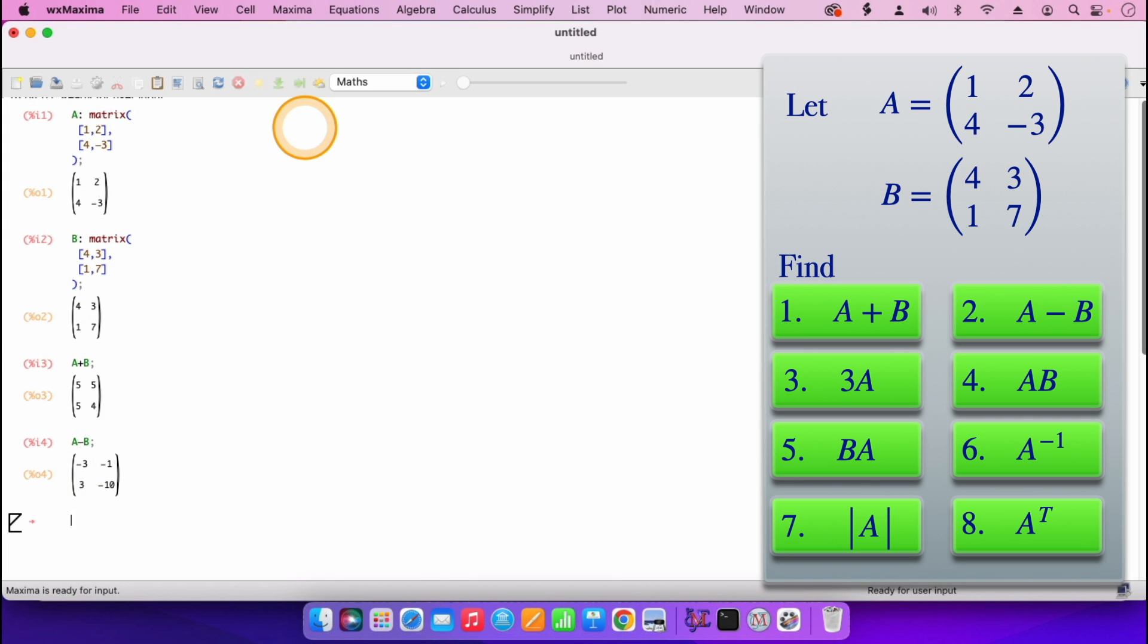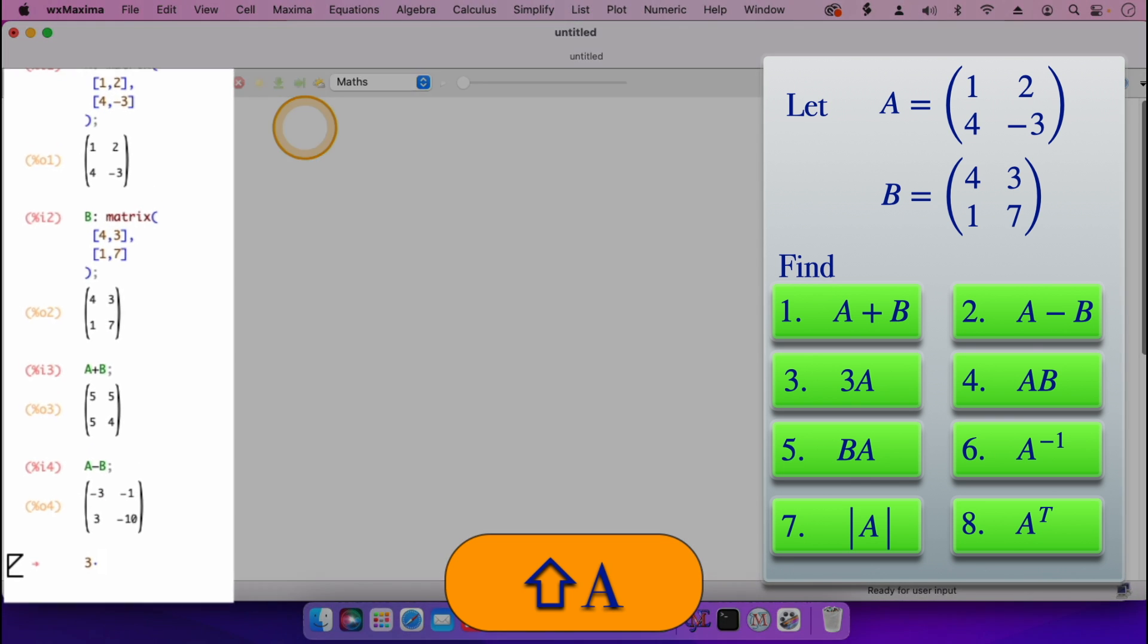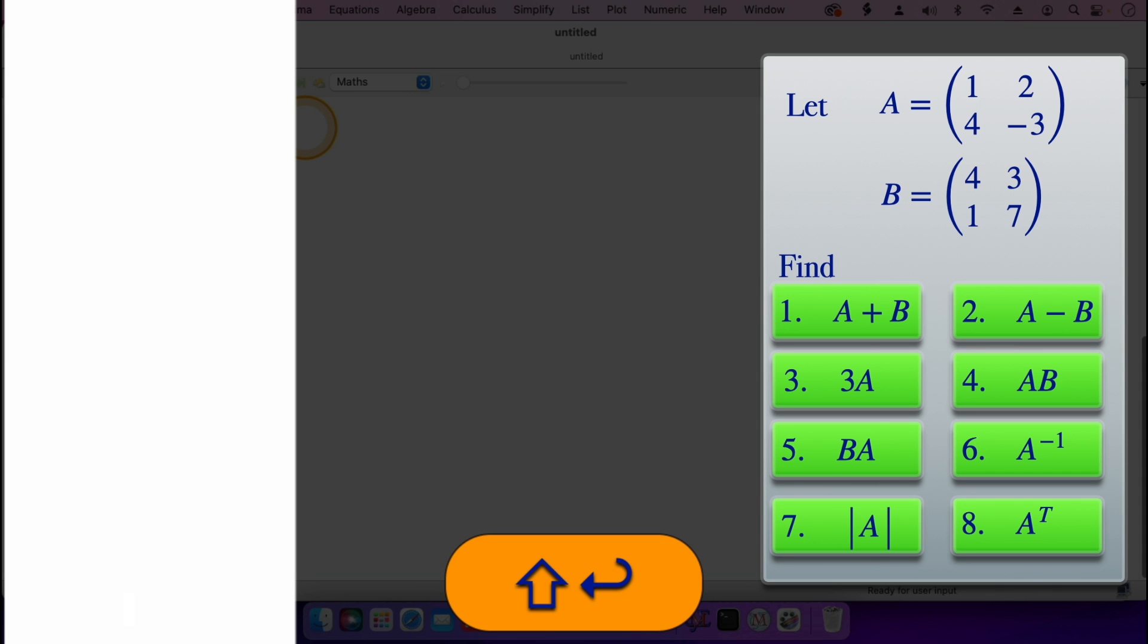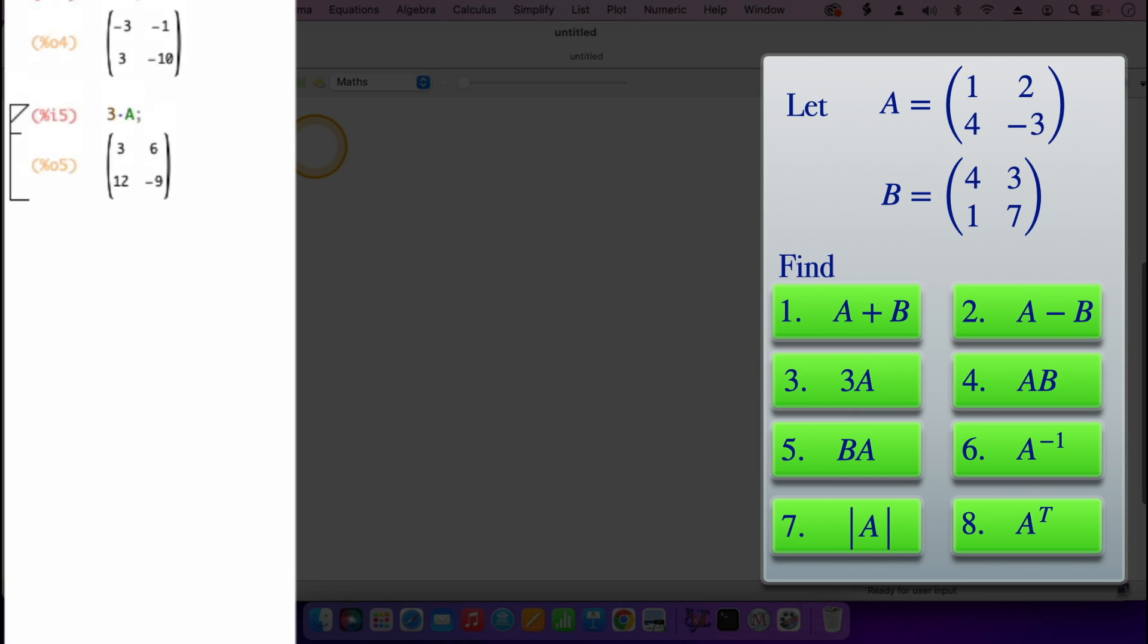So we now go on to question number three, multiplication of a matrix by a scalar. So that's three A, we are saying three times then the A. You put the times which is on the num lock there, so three times A. Let me scroll up. The three times A is three, six, twelve, minus nine.